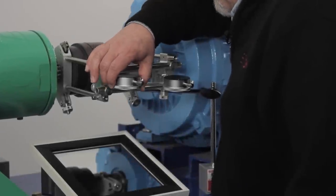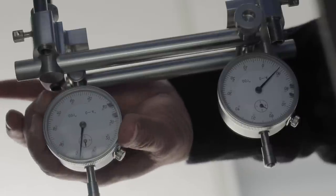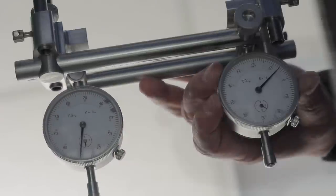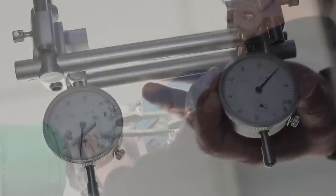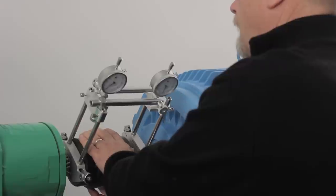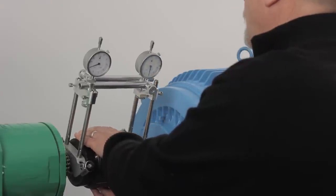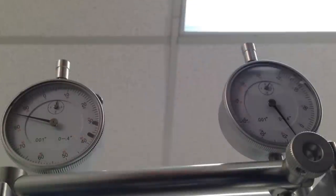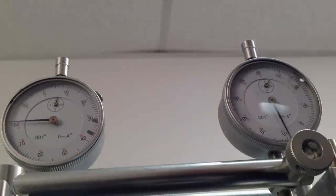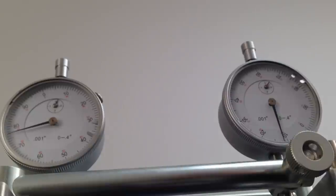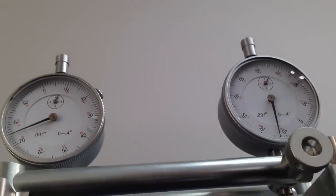Zero both dials at the nine o'clock position. While controlling for backlash, rotate the dials 180 degrees to the three o'clock position. Watch the dials as you rotate, and take note of the direction both needles are moving, positive or negative.